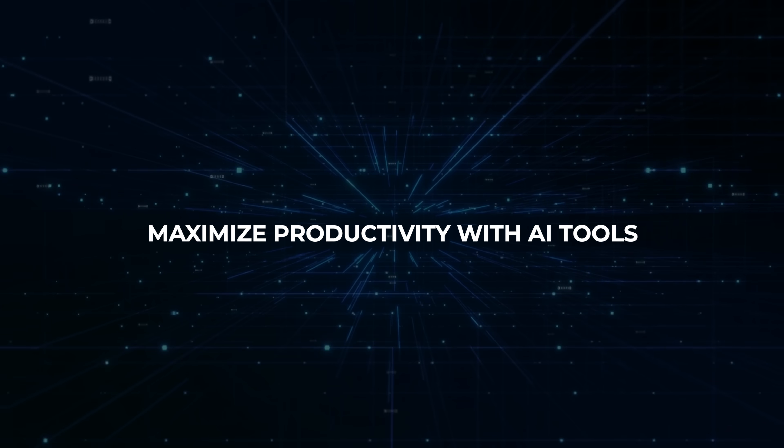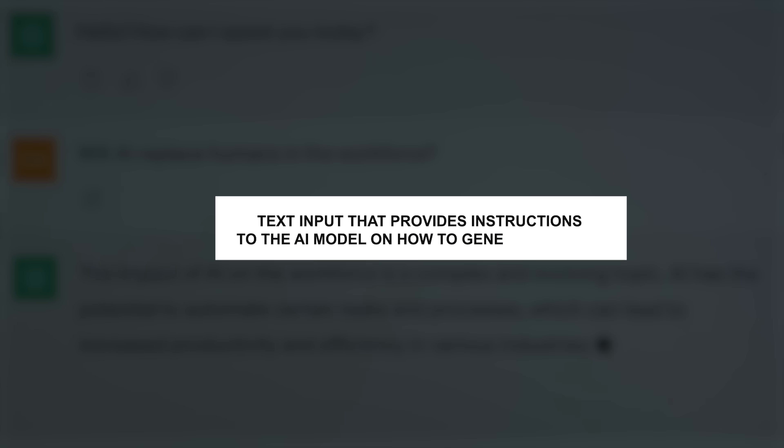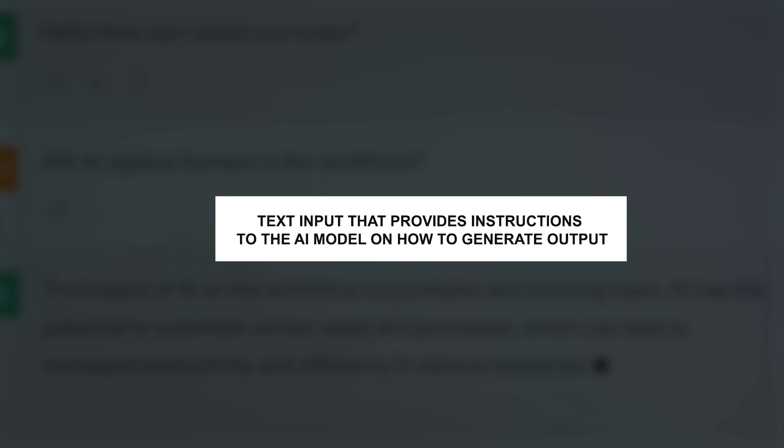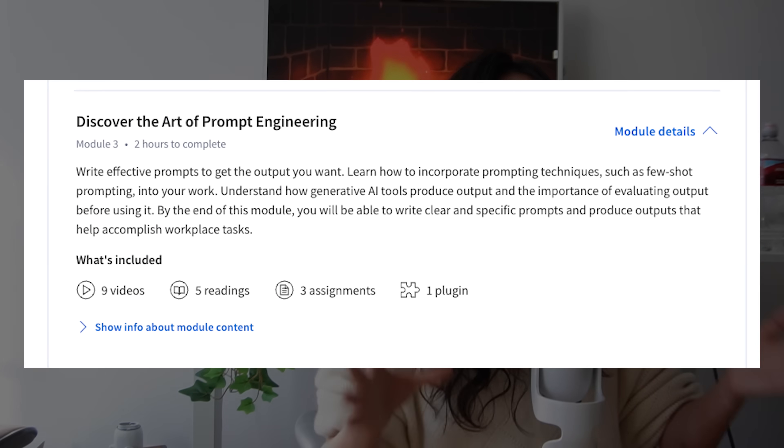That was basically the first module. Next up is maximizing productivity with AI tools. The way you interact with most AI models is through prompting, which is text input that provides instructions to the AI model on how to generate output — like asking Gemini to write your email. The way in which you prompt can dramatically change the quality of the results you get back, which is why there's an entire module on prompt engineering.